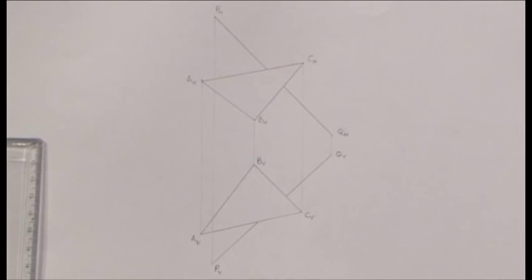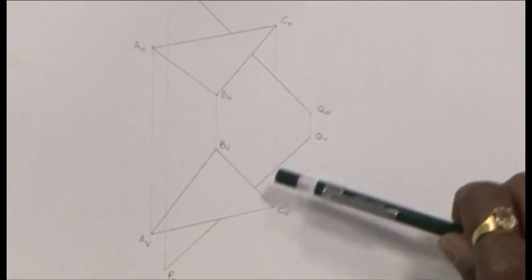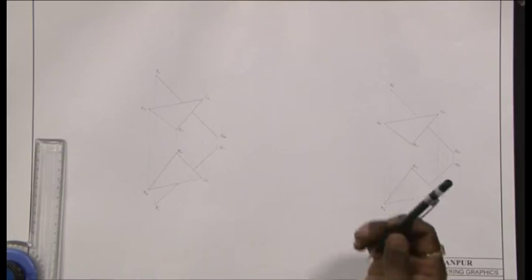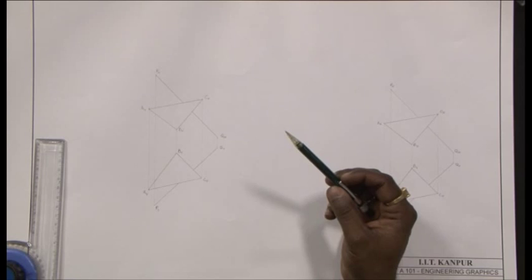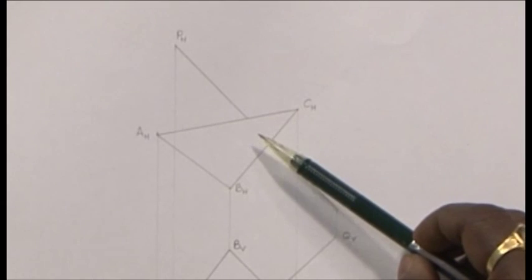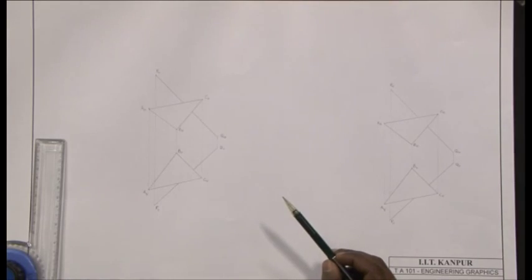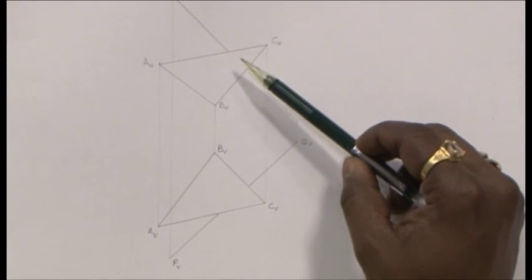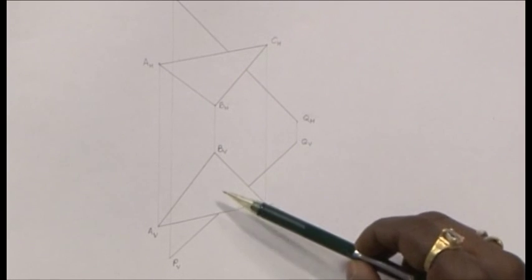Today, we will draw details on the interaction between planes and lines. Interaction involves two aspects which we would address. Number one, what would be the intersection point between a line and a plane? And number two, which part of the line will be visible within the projection of the plane?